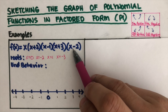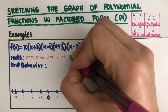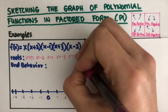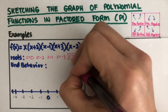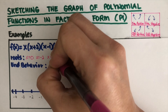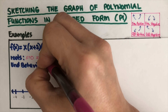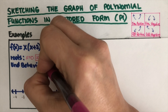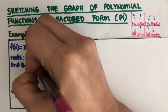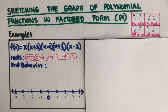The fifth root is x equals positive two. So these are the roots — we use the zero product property and solve for x to find all of them.